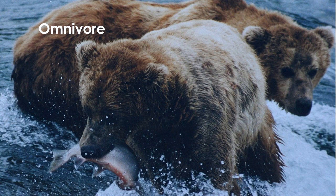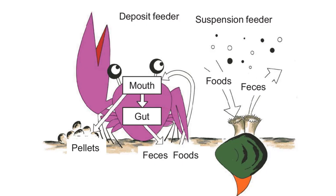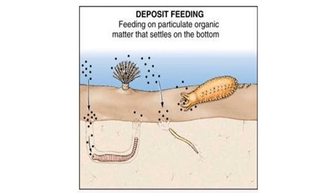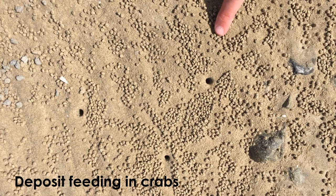Some animals are omnivores — they eat both plant and animal material. Bears, for example, generally eat meat, particularly when preparing for hibernation, but are also known to eat other things. In the ocean, there are two important types of feeders: deposit feeders and suspension feeders. Deposit feeding animals feed on organic matter that accumulates in soft sediment — in many cases the animals actually ingest the sediment along with the food. Crabs usually eat while burrowing through sediment, ingesting both food and sand, then excreting the sediment out as small pellets.